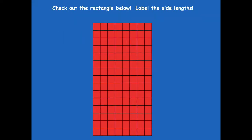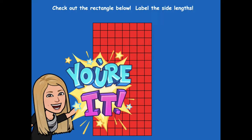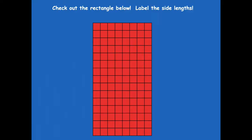Check out this rectangle below. I want you to label the side lengths — do a quick sketch of this rectangle on your dry erase board. It doesn't have to be perfect; just make sure the sides on the right and left are longer than the sides across the top and bottom. Count what I have up here to label your sides, then click play when you're ready. The side lengths I came up with are 15 centimeters and 8 centimeters. If you didn't label with centimeters, add that in now.